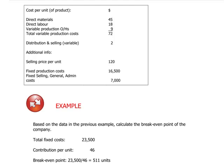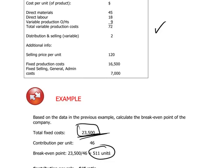In the last session we calculated, based on a scenario, the break-even point in number of units for the company. To remind ourselves of the calculation: the total fixed costs of the company was $23,500 and we divided this by the dollar contribution per unit of $46, giving us a result of 511 units corresponding to the break-even level.